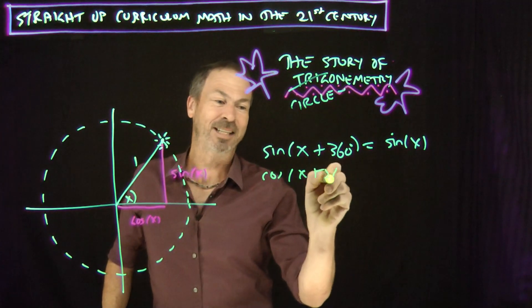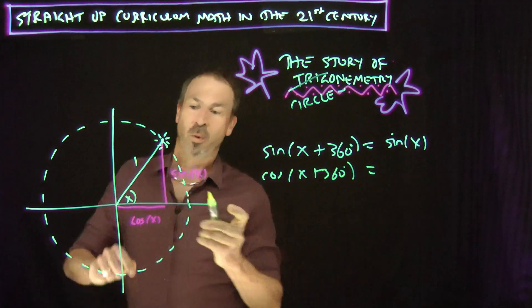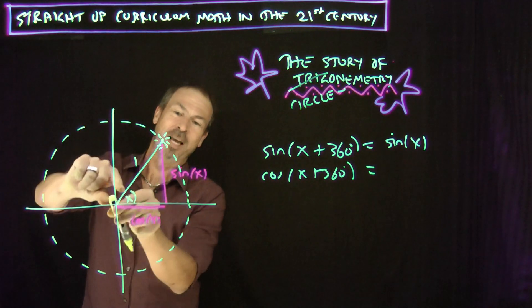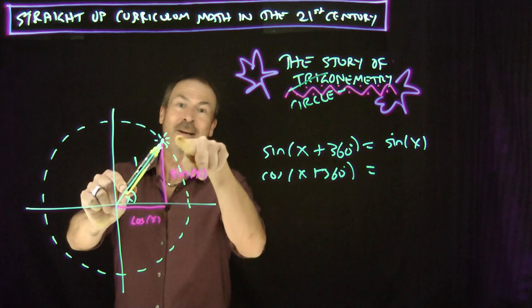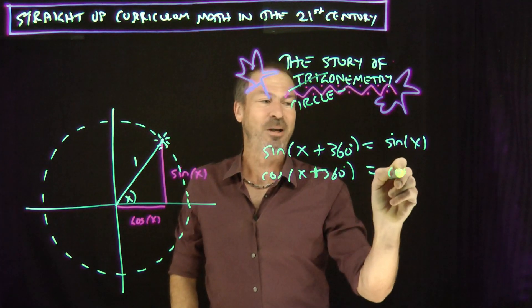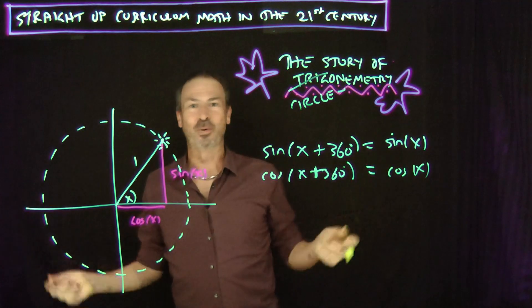Cosine of X plus 360 degrees. Okay, Sun is at an angle X plus an extra 360 degrees. Where's my Sun? Well, same as it was at angle X. So the cosine must be the same. The overness here is the same as the overness there. There's another trigonometry.